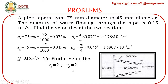Problem: A taper pipe reduces from 75 mm diameter to 45 mm diameter. The quantity of water flowing through the pipe is 0.15 meter cube per second. Find the velocities at the two sections. From the figure, diameter D1 = 75 mm and D2 = 45 mm. The quantity of water flowing Q = 0.15 m³/s. We need to find inlet velocity V1 and outlet velocity V2.